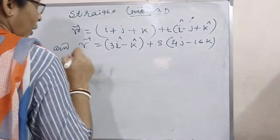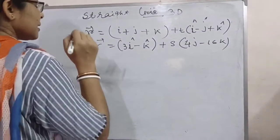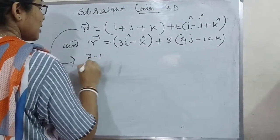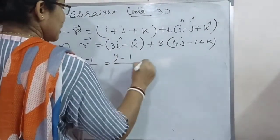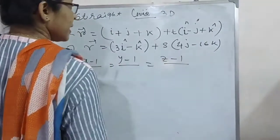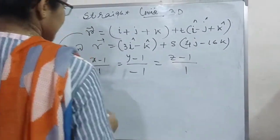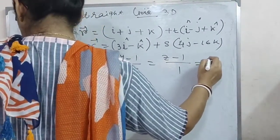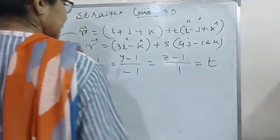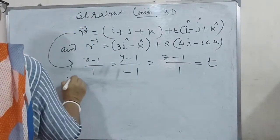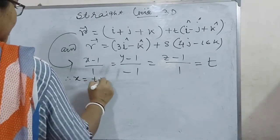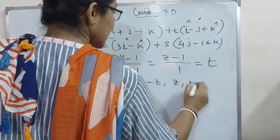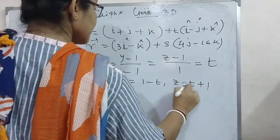The symmetrical form, that means the Cartesian equation of the first straight line, is: (x minus 1)/1 = (y minus 1)/(minus 1) = (z minus 1)/1. If I take this equal to t, I will get x equal to t plus 1, y equal to 1 minus t, and z equal to t plus 1.